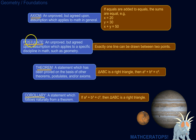It's important to know these words and recognize them and not get too intimidated by them. So an axiom is an unproved but generally agreed upon assumption which applies to math in general. Proof is a big thing in geometry and in math in general, and actually in the sciences even more broadly.